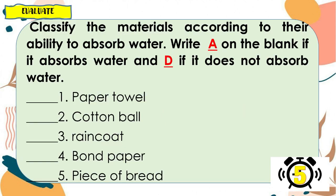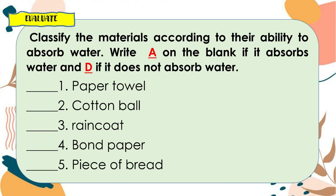For better understanding, please answer the following. Classify the materials according to their ability to absorb water. Write A on the blank if it absorbs water, and D if it does not absorb water. Go! Let's check your answers. For number 1, the answer is A — it absorbs water. Number 2, letter A — it also absorbs water. Number 3, letter D — it does not absorb water. Number 4, letter A. Number 5, letter A.